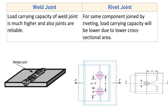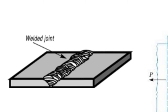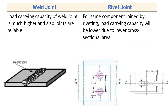Load carrying capacity of the weld joint is much higher and the joints are reliable. As the weld joint has more strength, its load carrying capacity is also high. For the same component joined by riveting, load carrying capacity will be lower due to the reduced cross-sectional area from the series of holes.